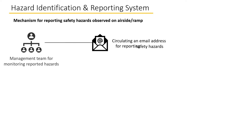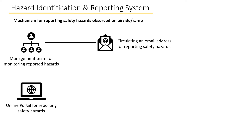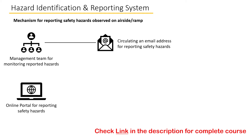Behind that email address must be a management team that regularly checks received complaints and takes actions to resolve them. Ramp workers must be encouraged to report such safety hazards wherever identified. In its more sophisticated form, a hazard identification and reporting system can be in the form of an online portal where different departments operating on the airside could log in and report a hazard that the online portal automatically categorizes and processes.